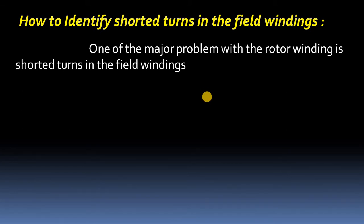Another reason for shorted turns is contamination. For large generators or large synchronous motors, bearings need cooling, which can be arranged using lubricating oil or water. These water or oil particles will contaminate the rotor field poles, causing shorted turns.